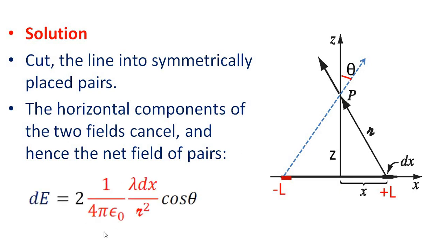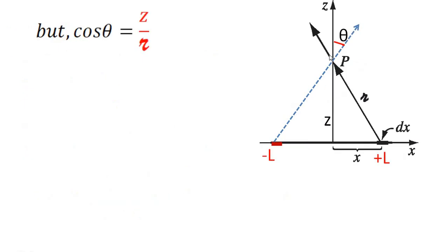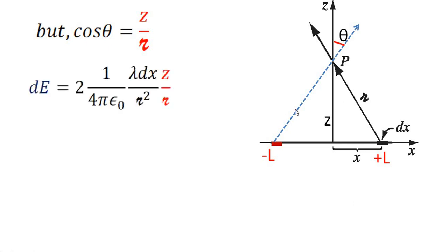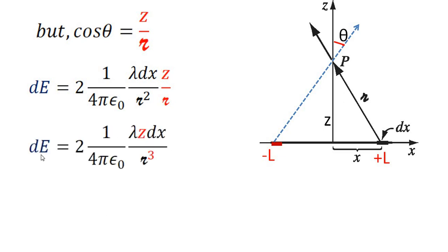The horizontal components of the two fields cancel and the net field becomes dE equal to 2 times (1 / 4 pi epsilon_0) times lambda dx / r² times cos theta. From the diagram, cos theta equals adjacent side divided by hypotenuse, that is cos theta = Z / r. Substituting: dE = 2 × (1 / 4 pi epsilon_0) × lambda z dx / r³.